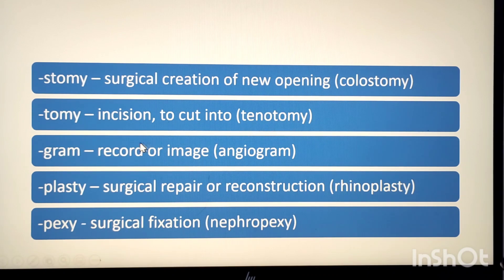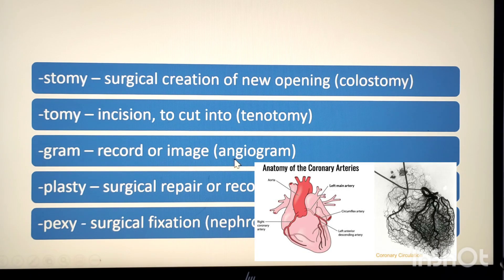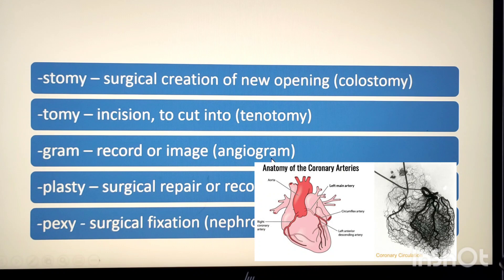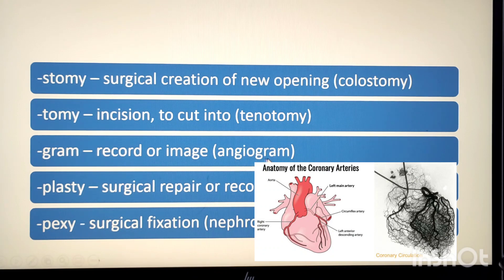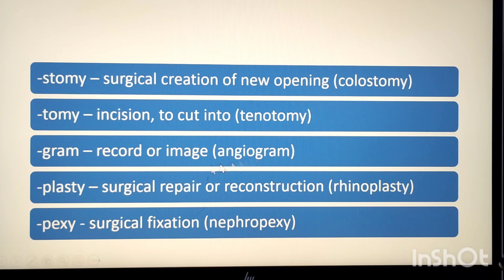The next suffix is -gram, which means record or image. Example: angiogram. Angio means vessel, gram means record, so angiogram means the record or image of the blood vessels produced using X-rays.